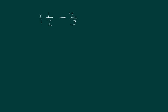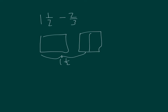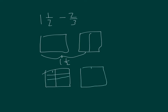One and a half minus two-thirds. We'll try a different method this time. Here's one, here's a half, so that's one and a half. Halves and thirds, so we get to sixths. One and a half minus two-thirds — two-thirds is equal to four-sixths. So that's one and three-sixths, which is also nine-sixths: six-sixths plus three-sixths, minus four-sixths.